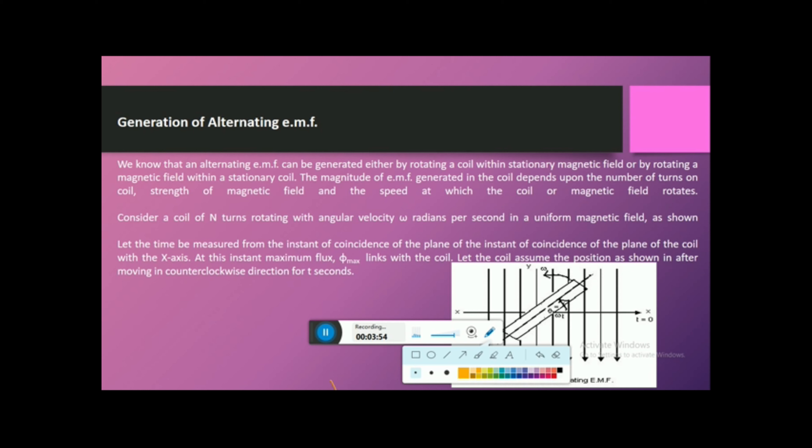Consider a coil with n turns rotating with angular velocity omega (radians per second) in a uniform magnetic field. Let the time be measured from instant of coincidence of the plane of the coil with X axis. At this instant, maximum flux phi maximum links with the coil, because the magnetic lines produce maximum flux and the maximum flux is cut.